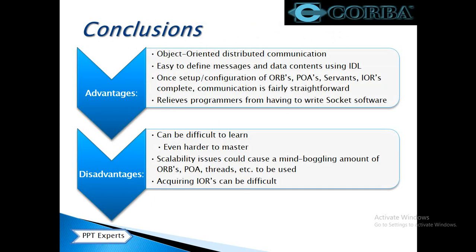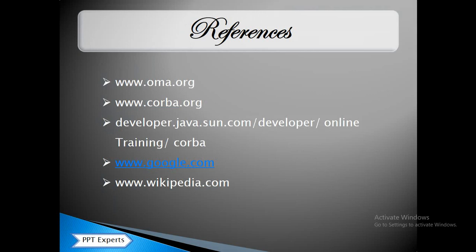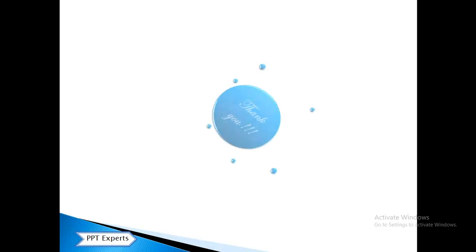Conclusions: Advantages are — it is an object-oriented distributed communication, it is easy to define messages and data contents, and it relieves programmers from having to write socket software. Disadvantages are — it can be difficult to learn and even harder to master, there are scalability issues, it could cause a mind-boggling amount of ORBs, and acquiring IIOP can be difficult.